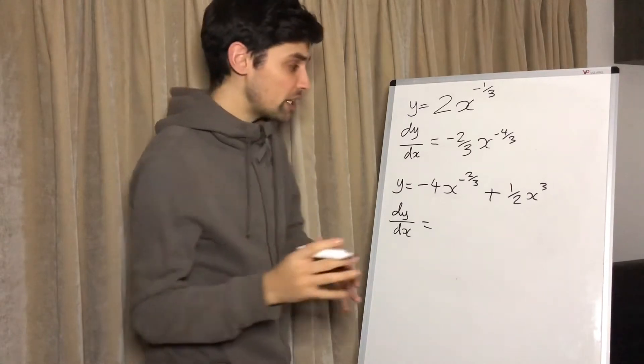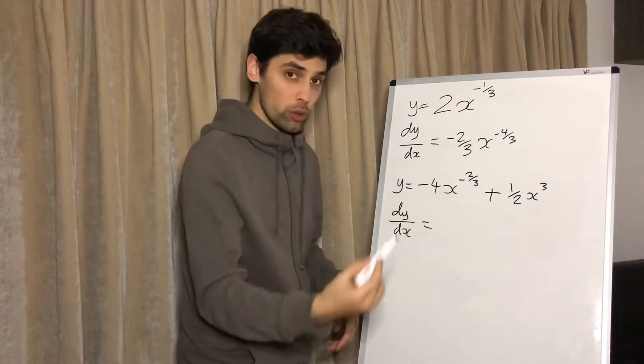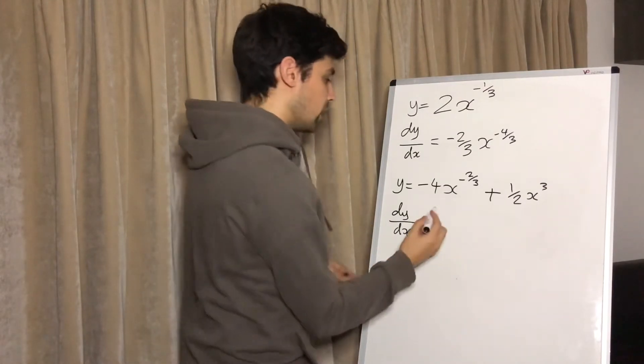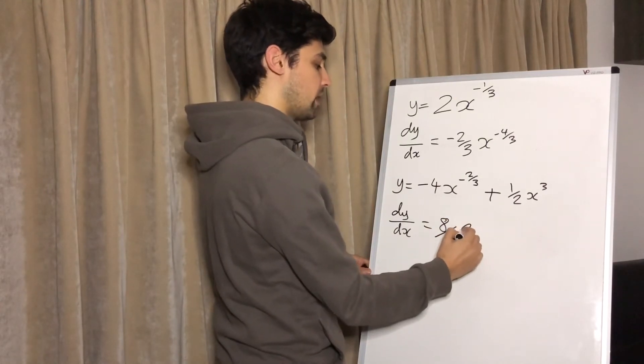It is really simple. Minus four times minus two thirds—four times two thirds is gonna be eight thirds, so it's positive because the two negatives cancel out. So it's gonna be eight thirds X, and then we minus one.